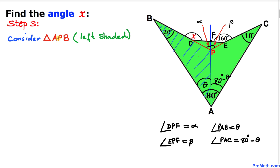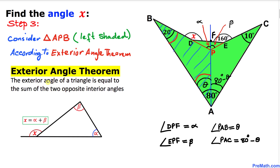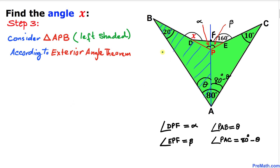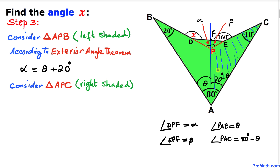Let's focus on triangle APB — the one shaded on the left-hand side. Recalling the exterior angle theorem: the exterior angle of a triangle equals the sum of the two opposite interior angles. In triangle APB, our two interior angles are theta and 20 degrees, and the angle alpha is our exterior angle. So we can write: alpha equals theta plus 20 degrees.